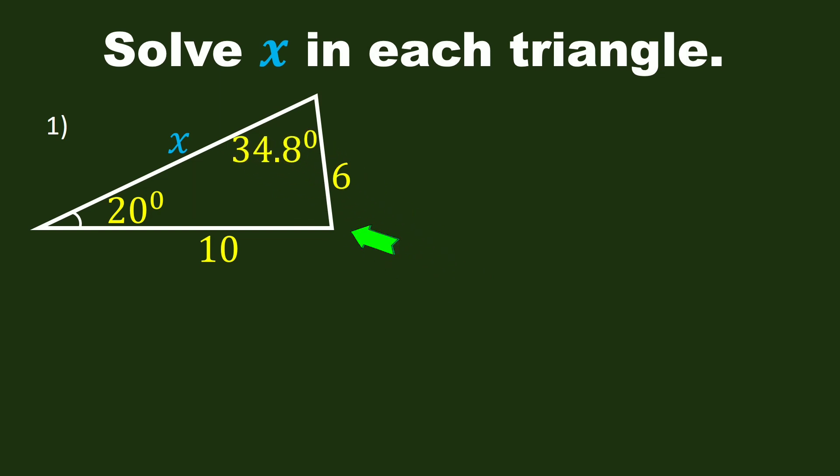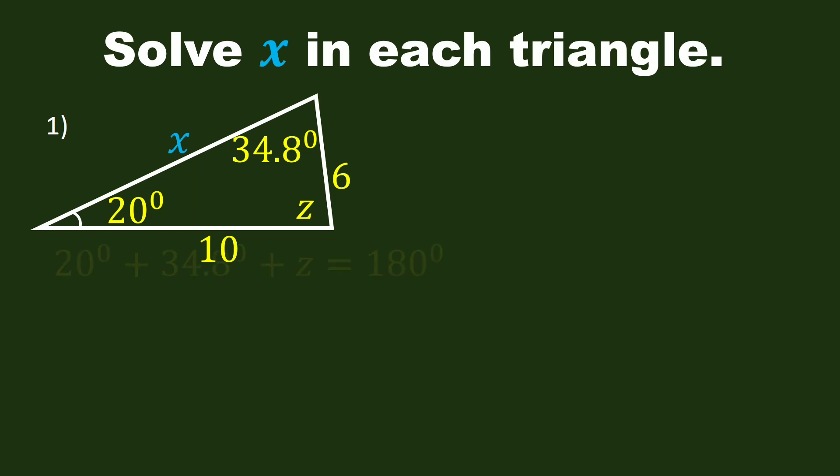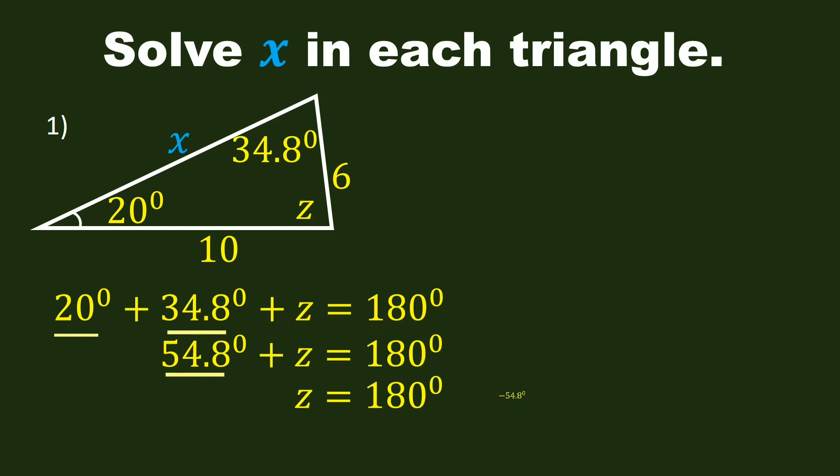Now, let's find the third angle using the angle sum theorem for triangles. We know that the sum of the angles of a triangle is 180 degrees. Let us name the third angle as angle Z. We have 20 degrees plus 34.8 degrees plus Z is equal to 180 degrees. 20 degrees plus 34.8 degrees is 54.8 degrees, plus Z is equal to 180 degrees, and finally Z is equal to 125.2 degrees. This is our third angle.